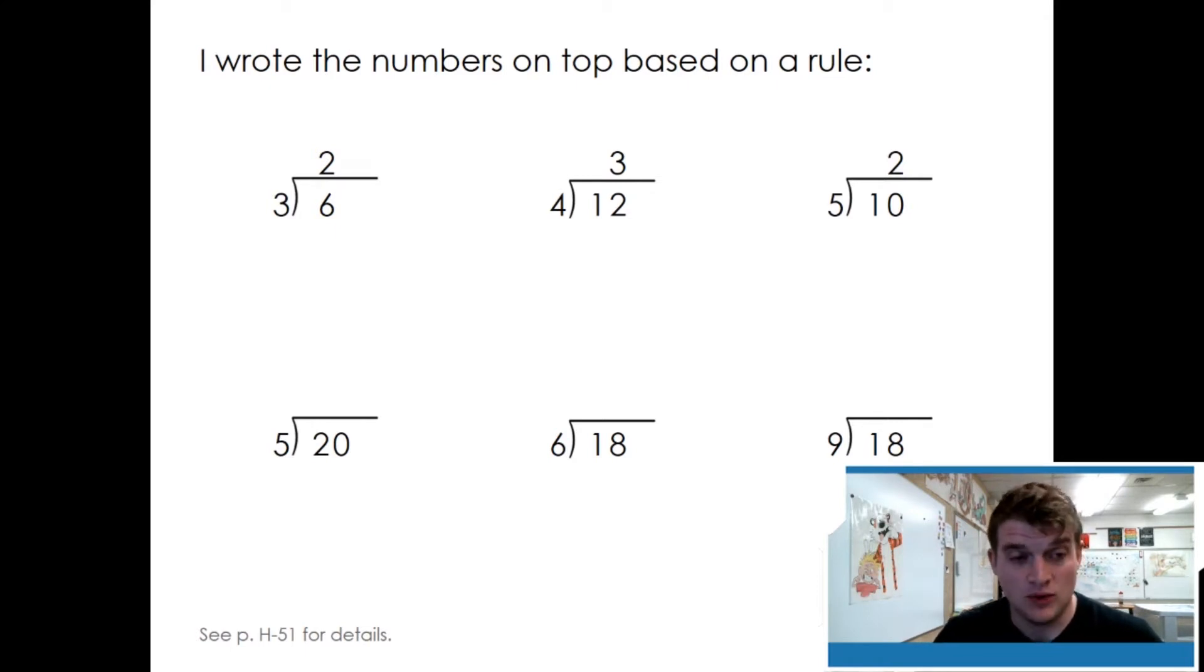Let's try one of the bottom ones. Twenty divided by five, skip counting by fives, five, ten, fifteen, twenty, is going to give us a quotient, an answer of four. Try the next three.